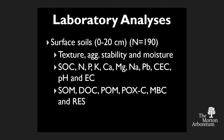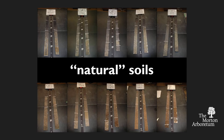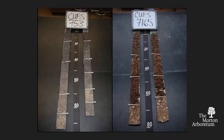My advisor Jim Bockheim at University of Madison always said: soils don't lie. We basically had two types of natural soils. These are Mollisols — we're the Prairie State, Illinois — we have lots of these, and this is a pretty good Mollisol. And here's an Alfisol, a forested soil, quite common. These are undisturbed natural soils included in our sampling. You can see by color there's a lot of organic matter in that Mollisol, less in the Alfisol.